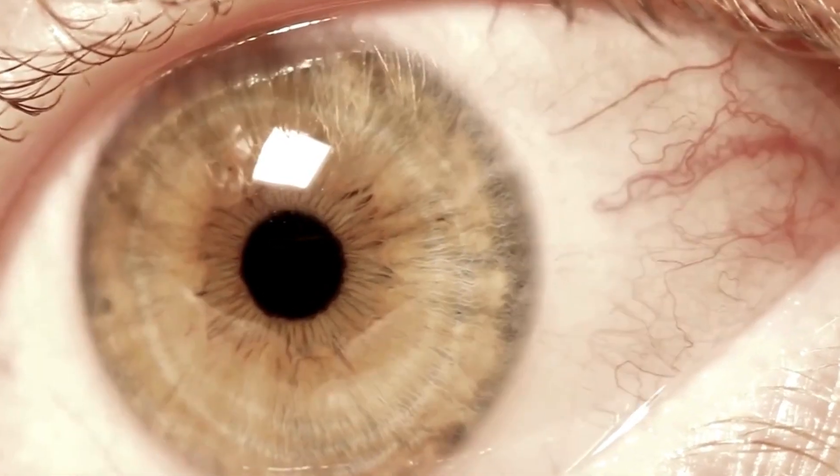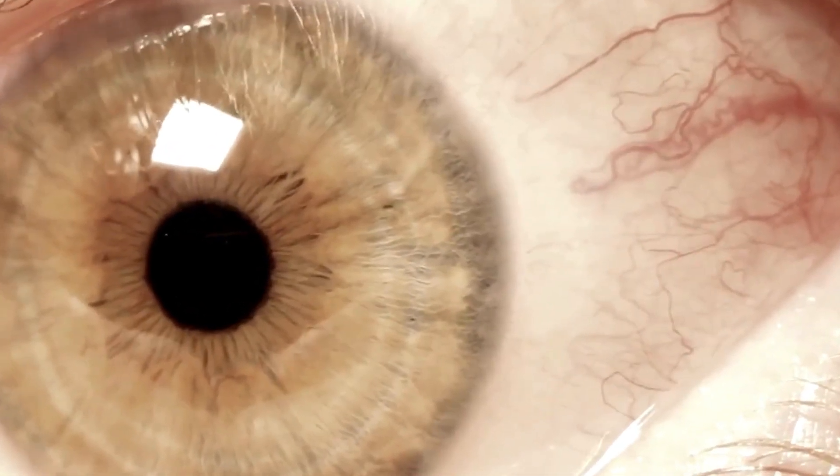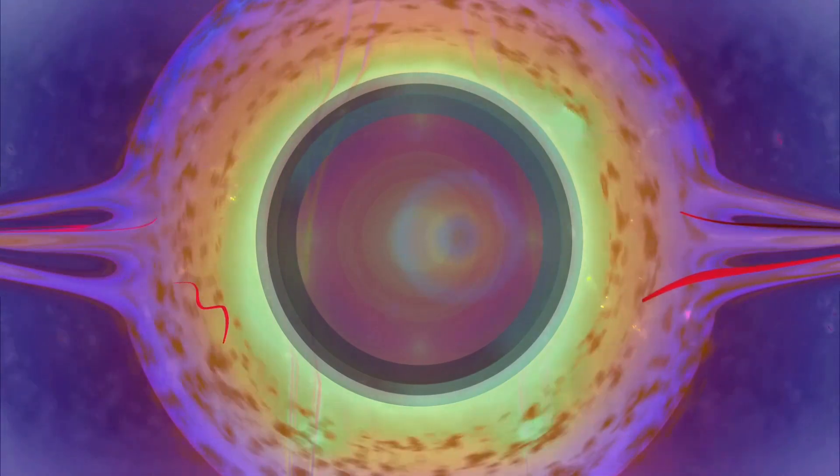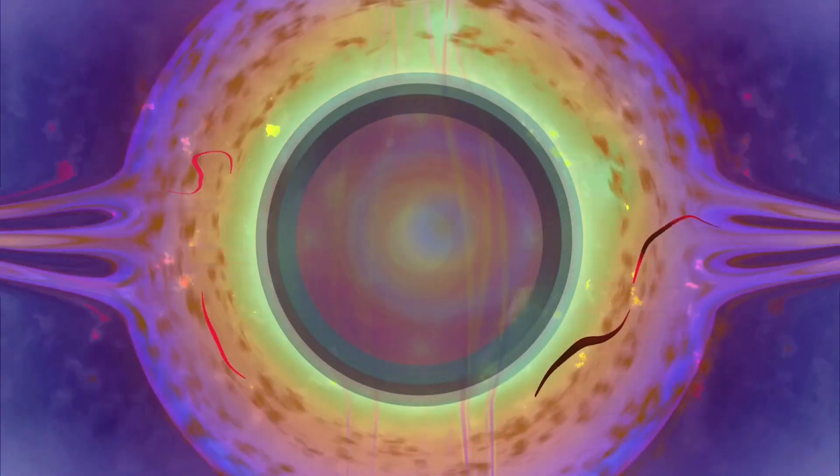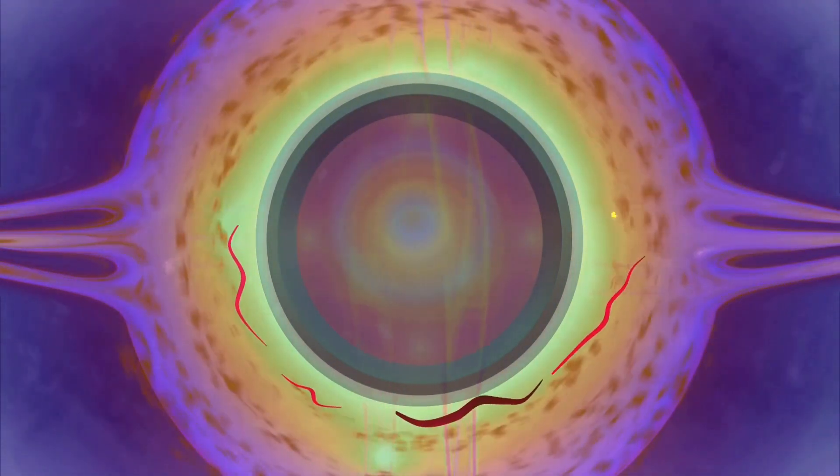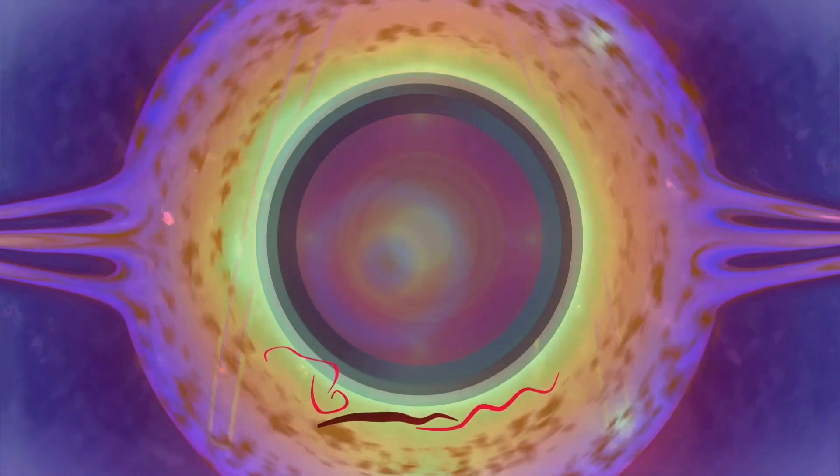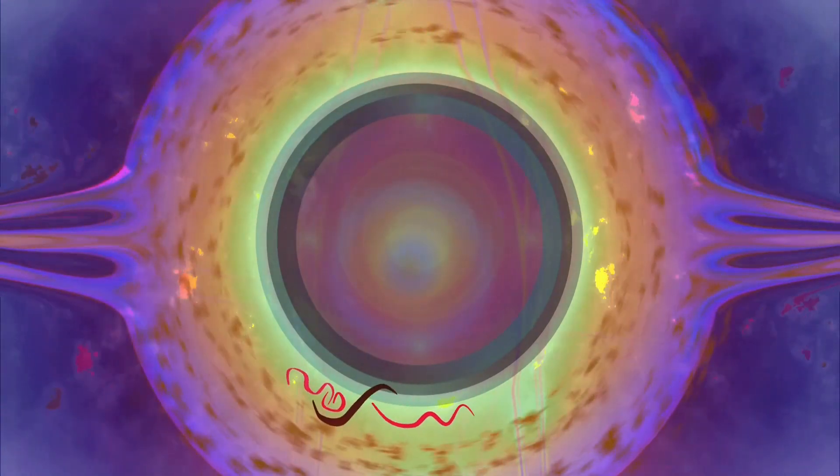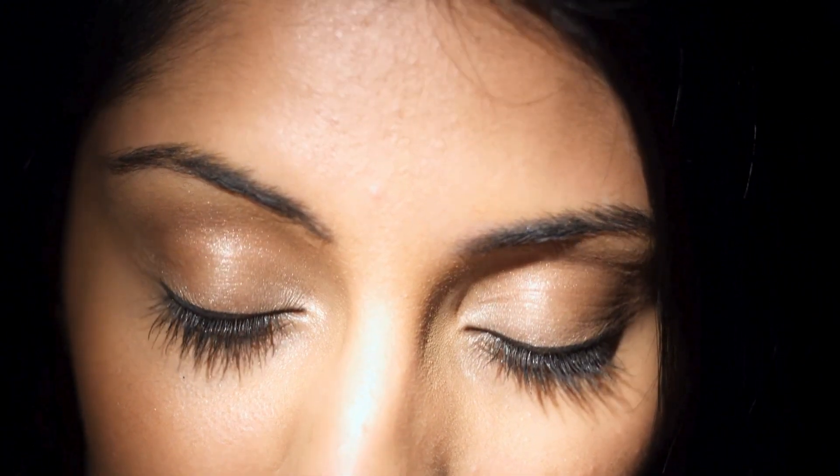Can we talk about blind spots? The idea that we literally have gaps in our vision just seems so bizarre. It's where the optic nerve connects to the retina, and there are no photoreceptors there to detect light. You can actually find your own blind spot with a simple trick using just your thumb. But if we have these blind spots, why don't we notice them all the time? It's because our brains are masters of compensation. They fill in the missing information so seamlessly we're completely unaware of these gaps in our visual field.